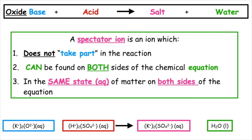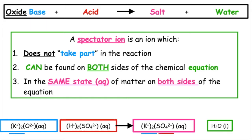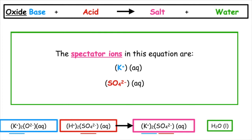Working from the product side, water is in the liquid state, so it will not contain ions. The salt potassium sulfate is in the aqueous state. So if we look at the K⁺, we've got that on the product side, and we also have that on the reactant side — that's an example of a spectator ion. The sulfate ion, SO4²⁻, is in the aqueous state on the product side, and on the left-hand side we also have SO4²⁻ in the aqueous state on the reactant side. So the spectator ions in this example are K⁺, which is our potassium ion, and SO4²⁻, which is our sulfate ion.